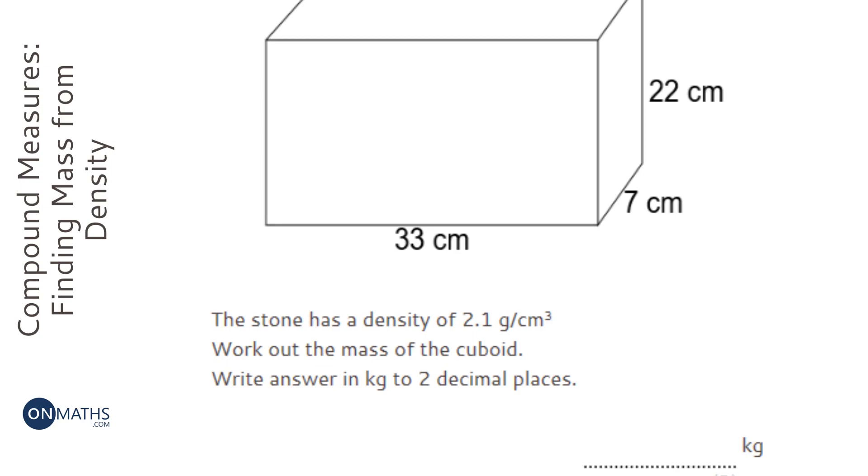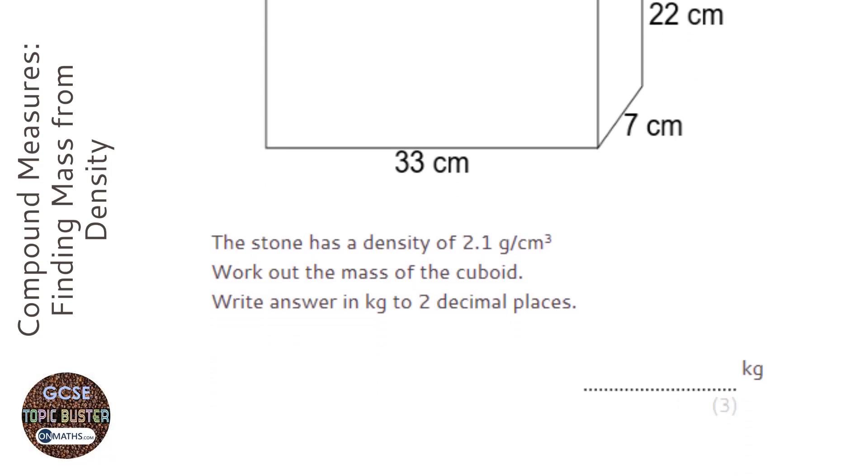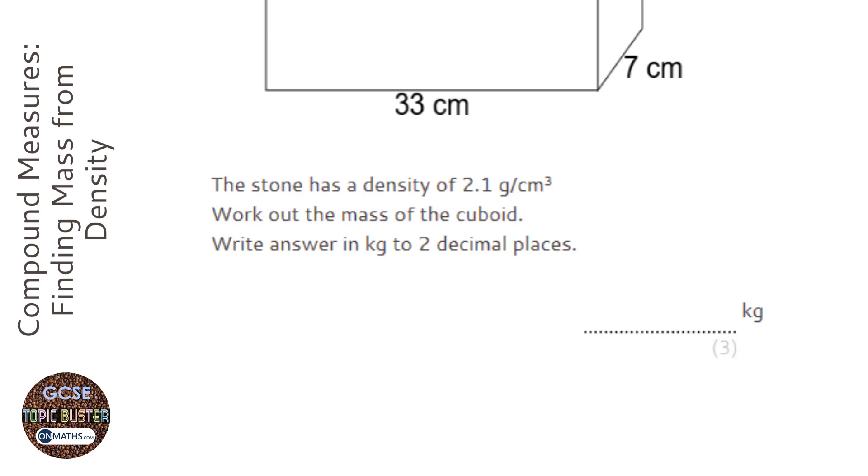Okay, so we're given the density and we're asked for the mass, and we can work out the volume. The first thing I'm going to do is draw my triangle with density, mass at the top, and volume at the bottom.